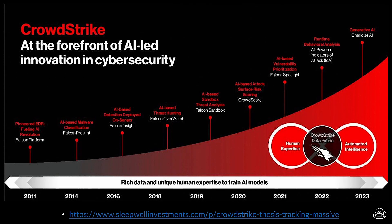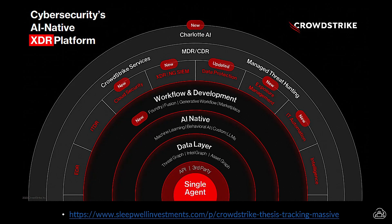CrowdStrike is currently investing in leading technologies such as generative AI. This slide from CrowdStrike shows a graph they use to explain their platform — it all starts with a single agent and goes from there. This is particularly useful for customers, but also for providers. The MSP capabilities of the CrowdStrike platform are unparalleled compared to what other solutions in the market try to do for managed security partners.